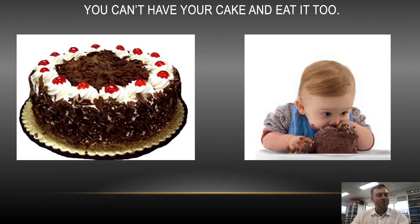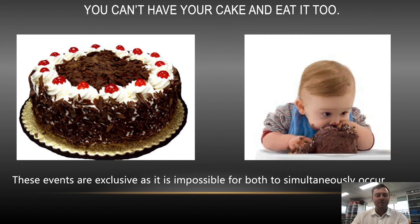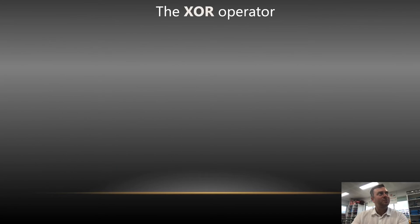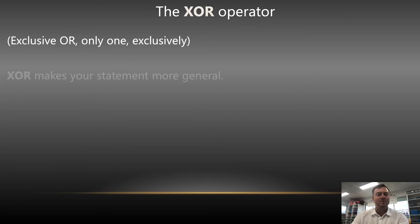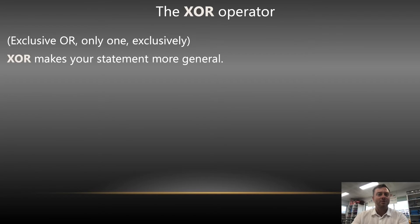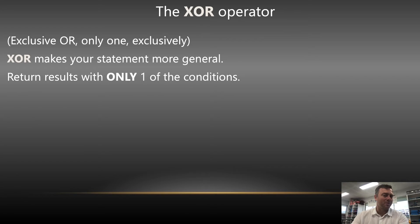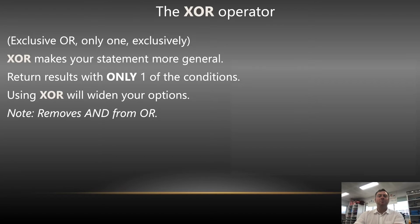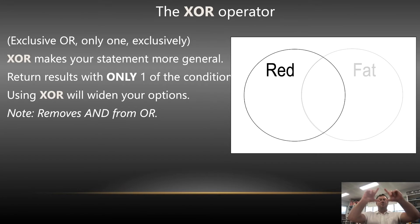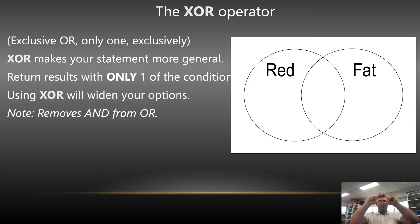So another thing you might have heard of is you can't have your cake and eat it too. So when we have events, they can't occur at the same time — and this sort of ties into the XOR operator. Exclusive OR basically means that you can't have both at the same time. So exclusive OR is exactly the same as OR except it doesn't include both. So it widens your options but it removes the AND from it. So if we think of that as a picture, it actually removes the Vesica Piscis in the middle — that's basically what XOR does.